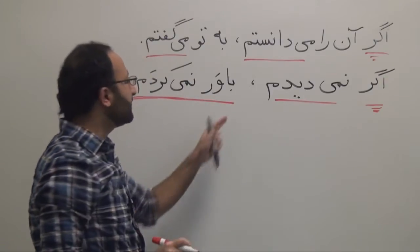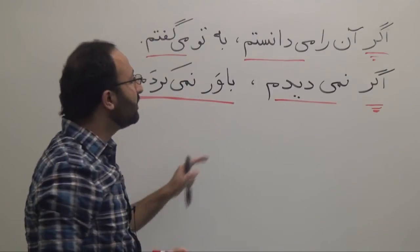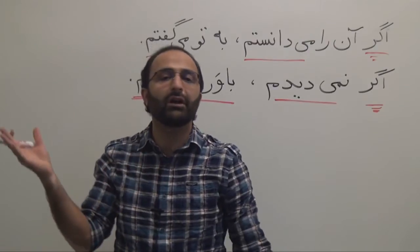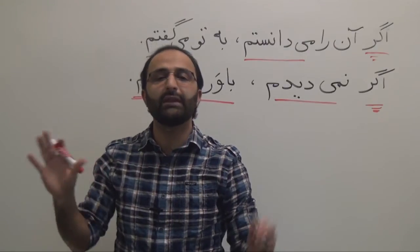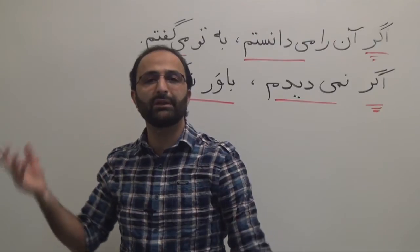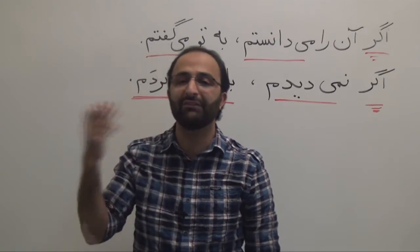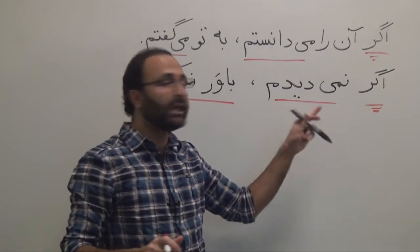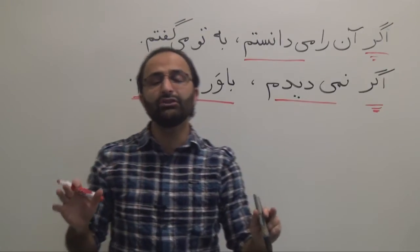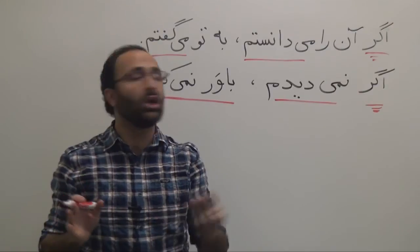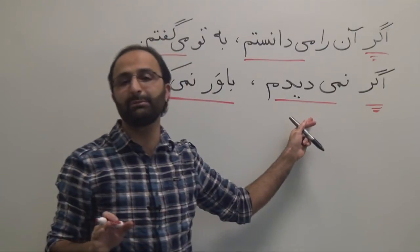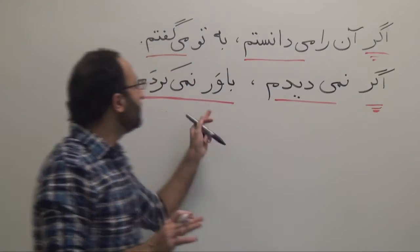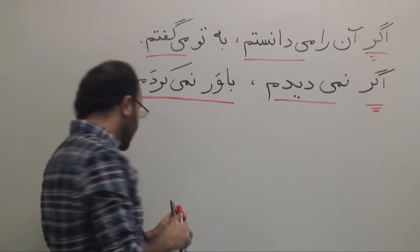This is our verb — a compound verb. Here, again, it's something impossible to change the situation, because I have already seen, and I believe that. But if I had not seen — here in English you are using past perfect, while in Farsi we are just using past tense, past continuous. اگر نمی دیدم باور نمی کردم.